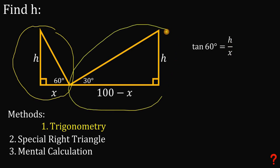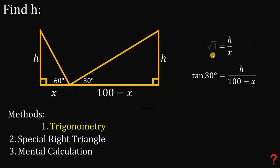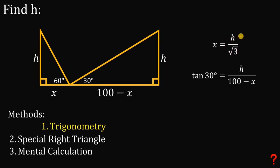In this big right triangle, using the tangent function again, we can say that tangent 30 degrees equals H over (100 minus X). Now let's simplify the first equation from the small right triangle. We know tangent 60 degrees equals square root of 3. Let's solve for X in terms of H by cross-multiplying: X times square root of 3 equals H, so X equals H over square root of 3. We will use this value later.